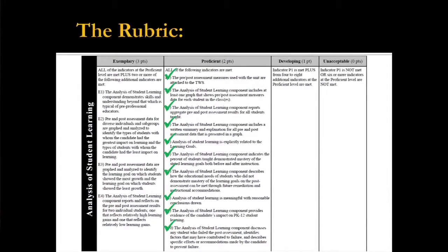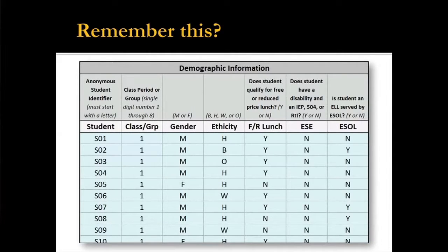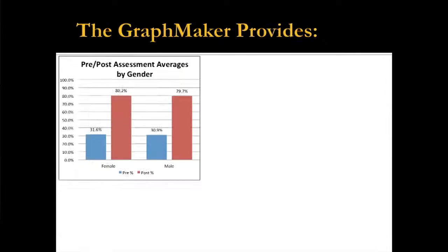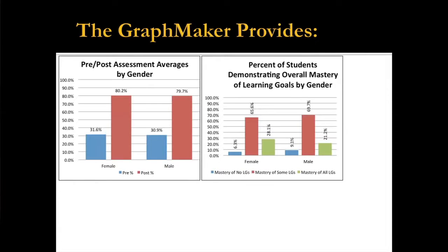Everything else you need to do to get exemplary is offered by the graph maker too. I've already talked about indicators two and three. But remember, if I've got all this demographic information on my students, I can compare pre- and post- along all of those factors. I also have mastery for each demographic factor, but I'm not going to crowd my slides with all of those.